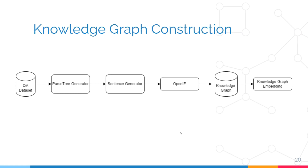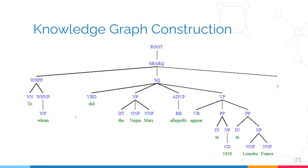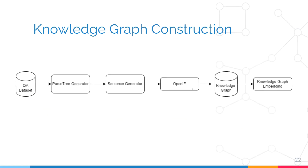Our first module is the knowledge graph construction module, which takes a question answering dataset and generates a knowledge graph from it. We take a question, generate a parse tree — the grammatical representation of the question — and rearrange the question into a sentence format with a space for the answer position. We take the answer from the QA pair and place it in the correct position, then pass the sentence to OpenIE to generate the facts. The good thing about OpenIE is that the generated facts are human-readable, which makes it easier to generate answers in natural language text.